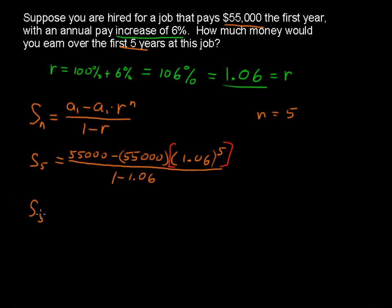I'll write the sum of the first five terms equals this 55,000 minus 55,000 times—now, that's 1.06 to the fifth power. That's 1.33822, and I've rounded there. I've held on to a good number of decimal places, just so we don't have rounding error at the end. And then, 1 minus 1.06 is negative 0.06.